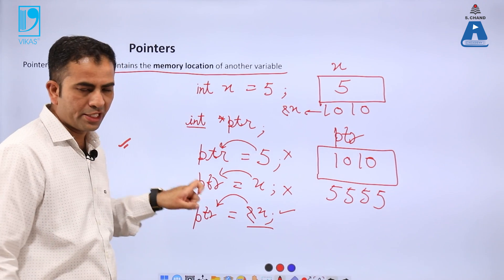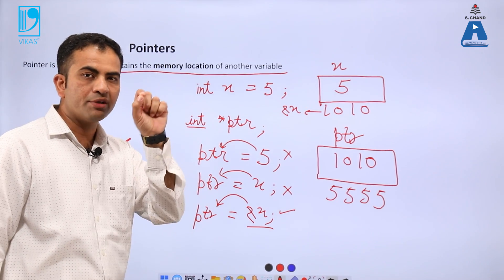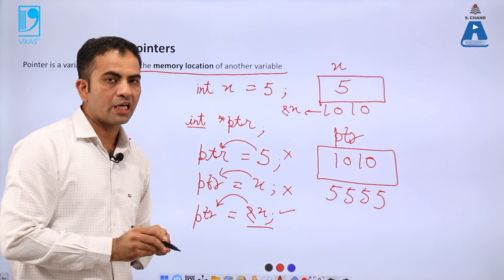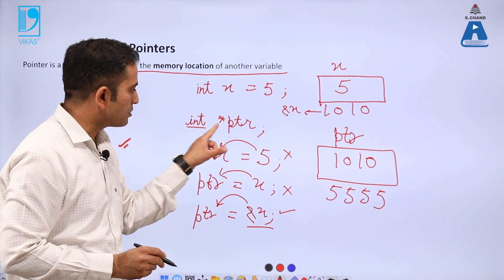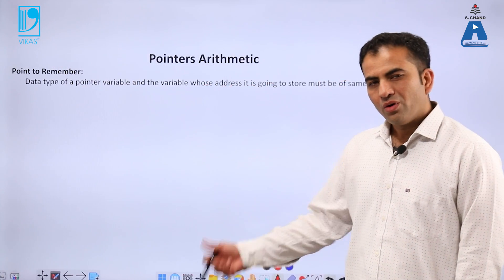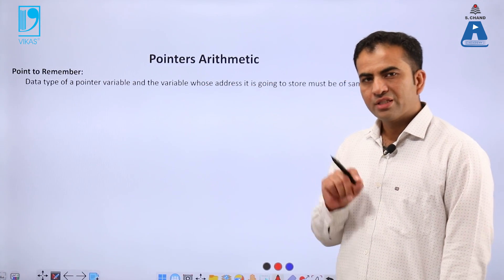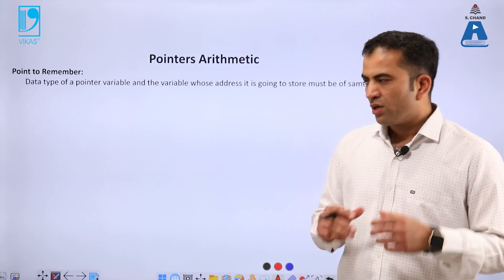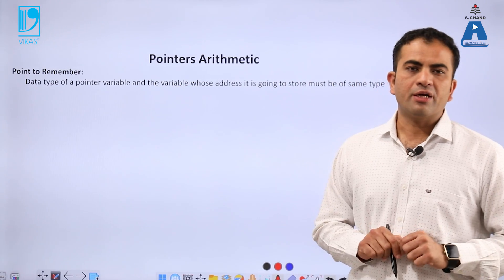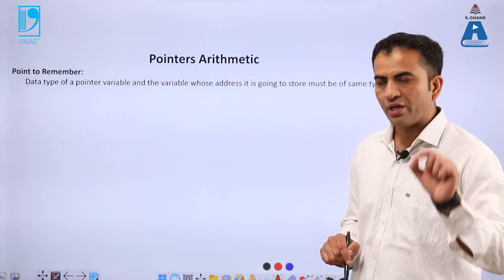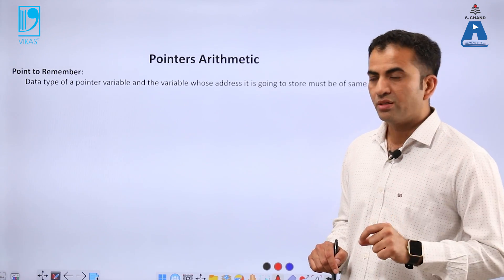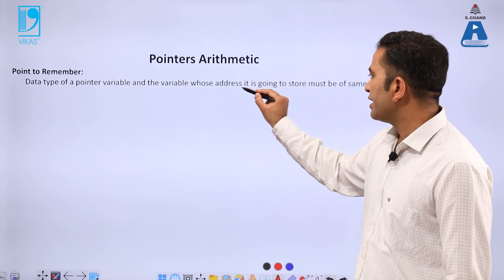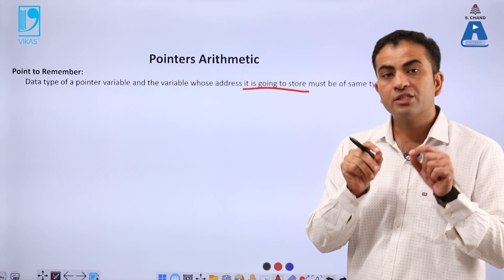Whenever you declare a pointer type variable, write the variable name with a star before it. Now we will study pointer arithmetic — how to do arithmetic operations using pointers. Before starting, we must remember one important rule: the data type of a pointer variable and the variable whose address it is going to store must be of the same type.